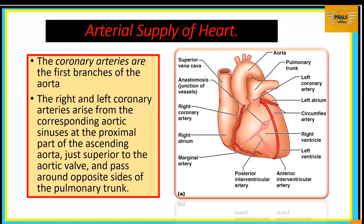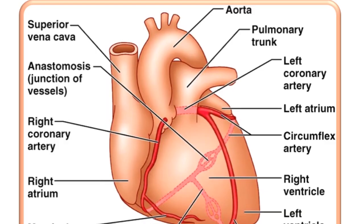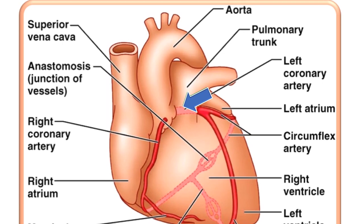The coronary arteries are the first branches of the aorta. When we discussed the aortic sinuses, we noted that the right and left coronary arteries arise from the corresponding aortic sinus at the proximal part of the ascending aorta, just superior to the opposite sides. They originate from these aortic sinuses and then pass to the opposite sides of the pulmonary trunk. In this image, we are seeing the two coronary arteries — the right coronary artery here and the left coronary artery, seen behind the pulmonary trunk.